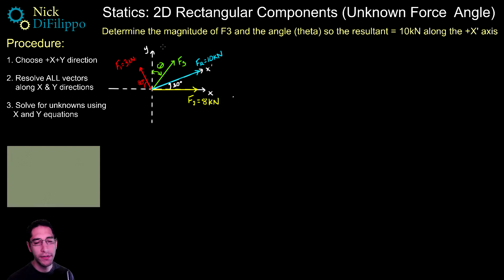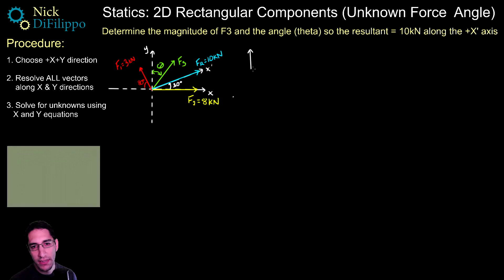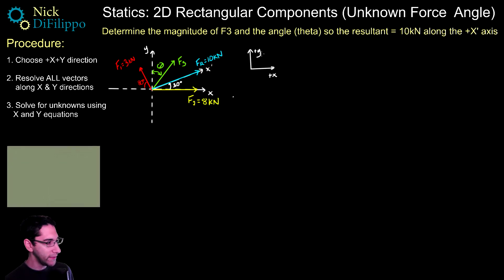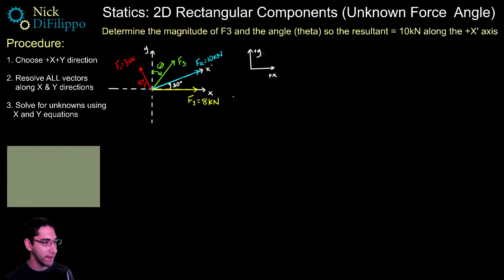Step one: we need to choose our positive x and y directions. I'm going to choose anything pointing to the right as my positive x, and anything pointing up as my positive y. Step two: resolve all of these vectors, including the resultant vector, along the x and y directions.